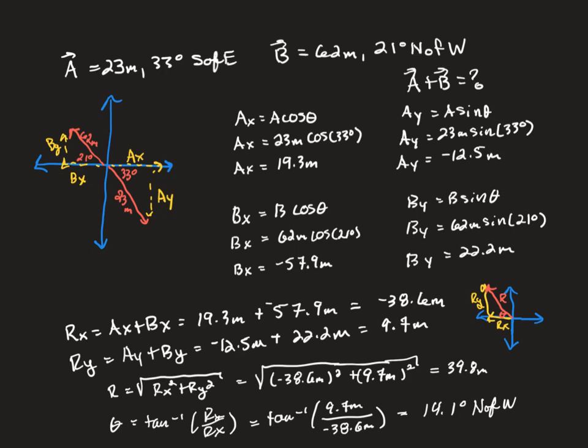So I've drawn my coordinate system here. So we have east, north, west, and south. So since we're south of east, we're going to point east and sweep south of it, putting our 33 degrees here in the fourth quadrant underneath the positive x-axis.